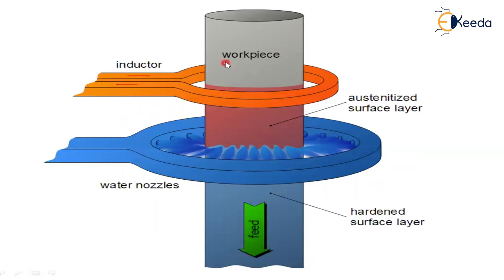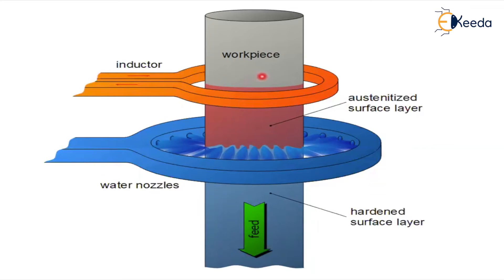The same workpiece can be hardened at different places with different hardness values, meaning hardness varies from one area to another because of this process. This allows us to maintain different hardened layers in the same workpiece, which is very useful. Not all the time is it required that the total workpiece be hardened with the same value — surface hardening is very useful in those cases.